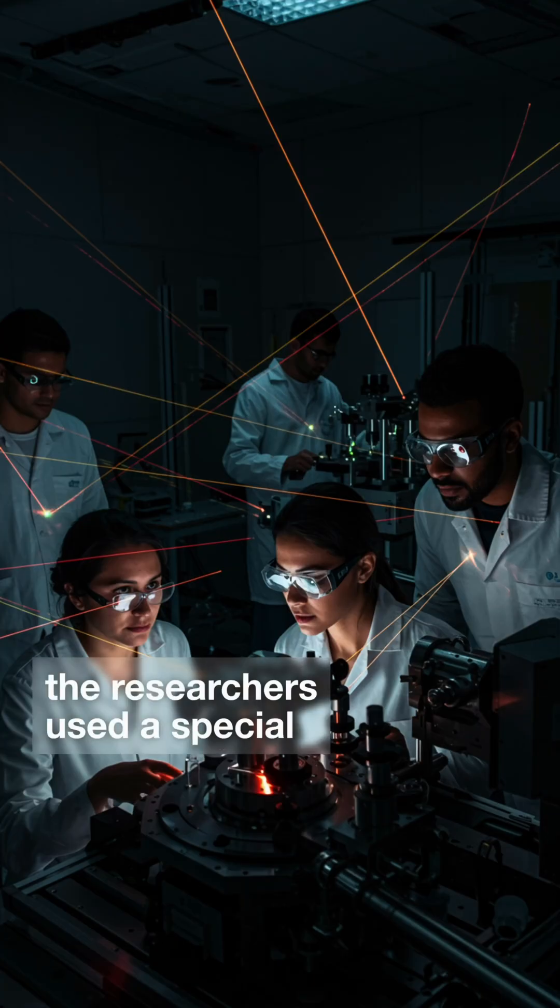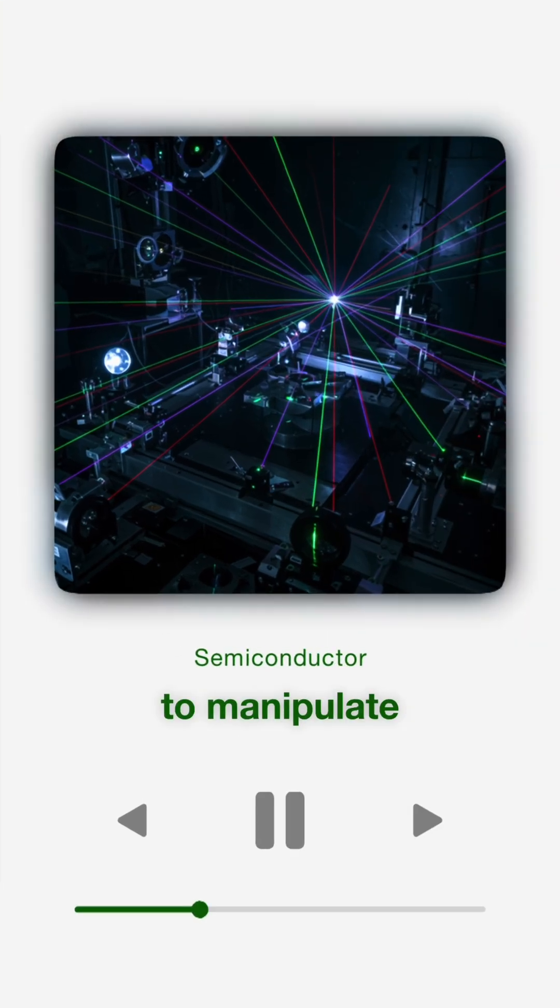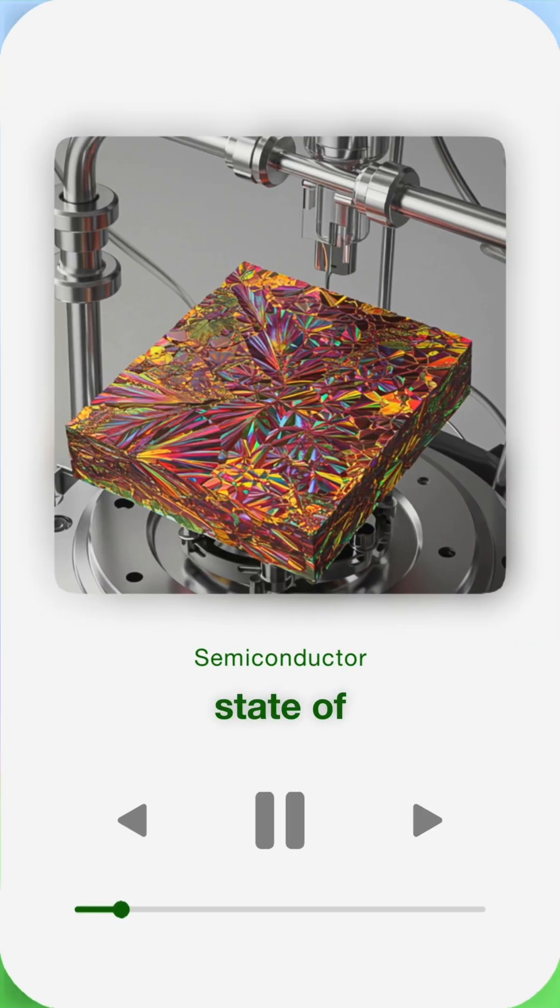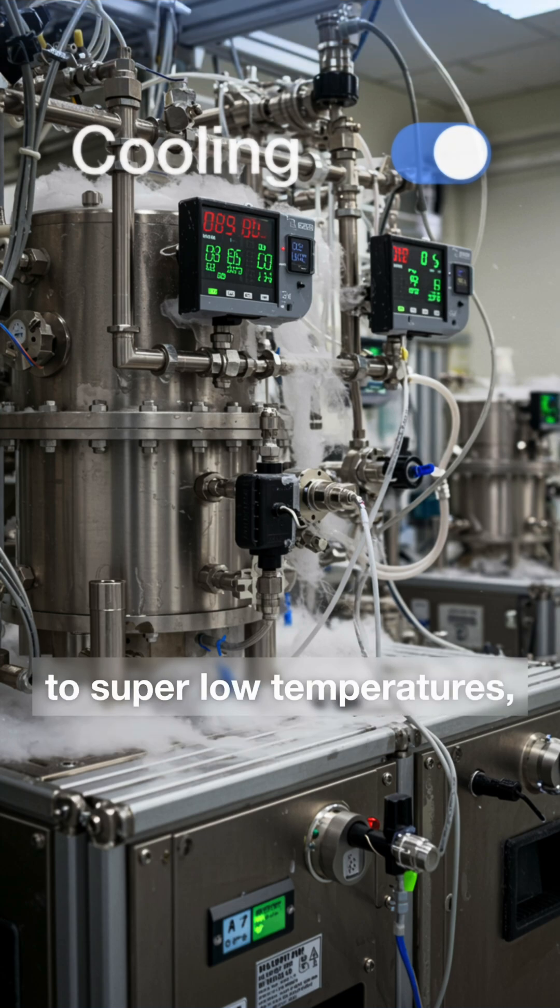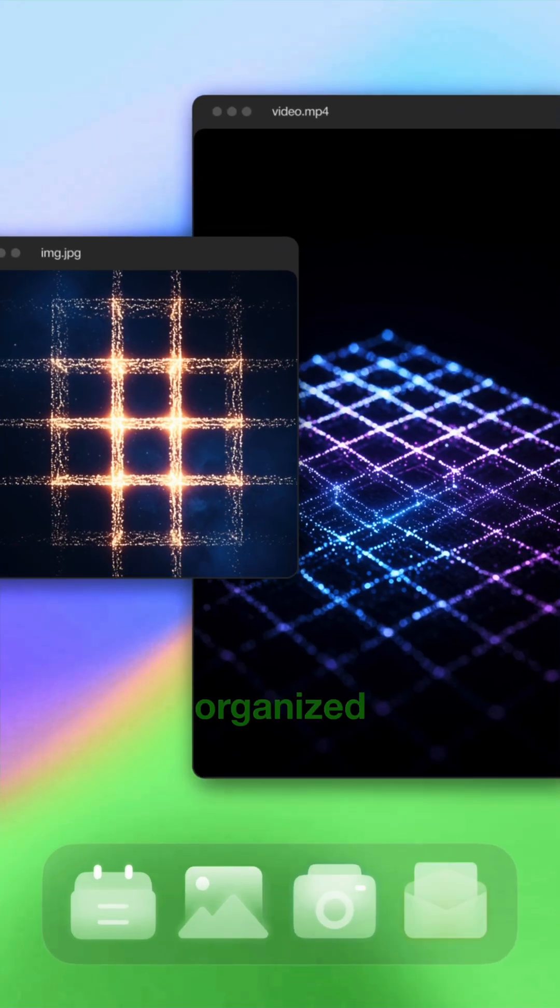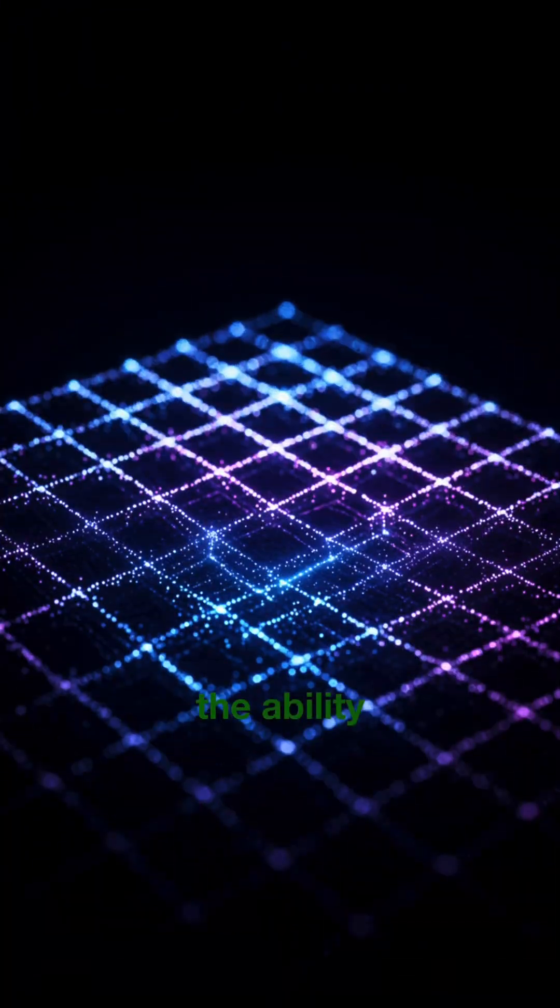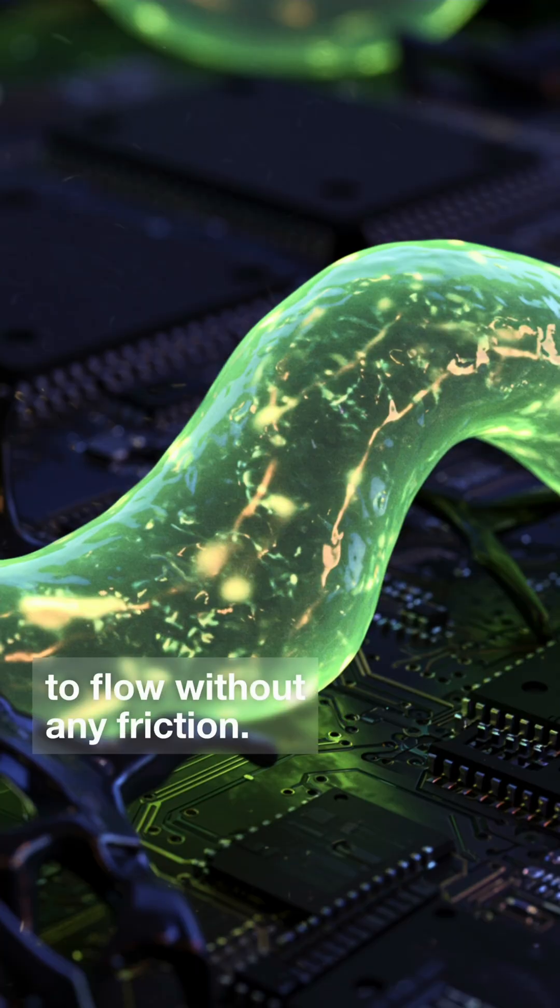The researchers used a special semiconductor to manipulate light and create this unique state of matter. When they cooled everything down to super low temperatures, the photons organized into a solid grid while maintaining the ability to flow without any friction.